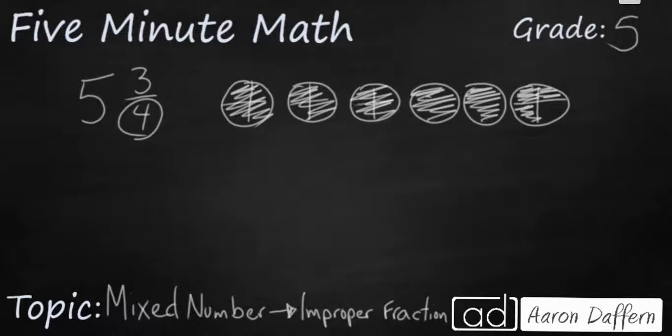And so what you should be doing is counting. We've got 4, 8, 12, 16, 20/4. And then we've got 1, 2, 3 extra. So that's going to end up being 23/4.